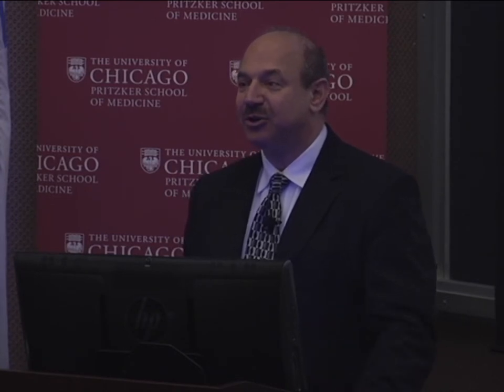There's something else that makes infection very special as a source of mortality: it tends to kill people at a very early age, disproportionately so. Looking at infectious disease death versus all other causes in the developing world — and we must remember all of the world was the developing world not very long ago — through the maximum age of reproduction (roughly 44 years), the infectious disease columns are the dominant source of mortality. This tells us infection has been an enormous selective pressure on our species throughout most of its history.